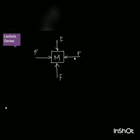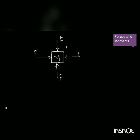So in this system, the forces along the X-axis cancel out each other and the forces along the Y-axis cancel out as well. The net force on the system is zero. This is the condition of equilibrium — when the net force on a body is zero, the body is in an equilibrium state.